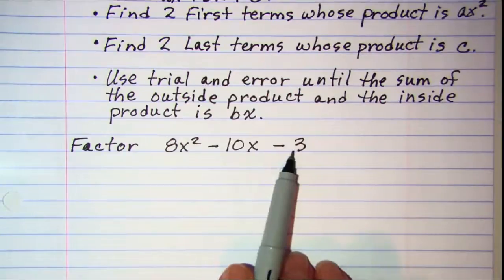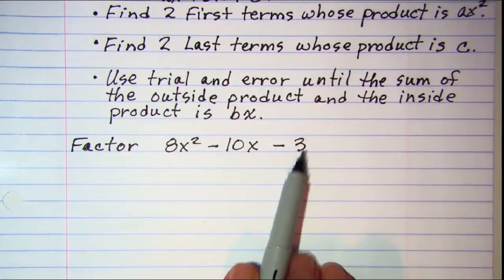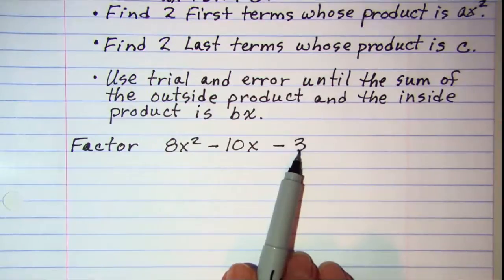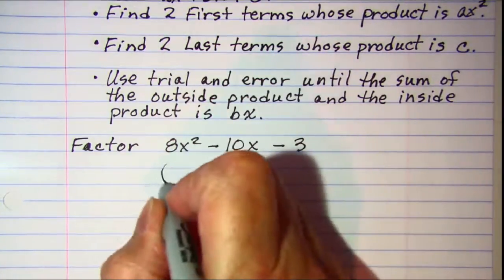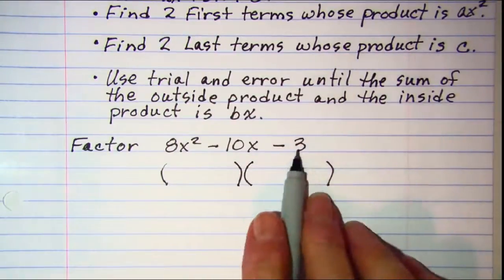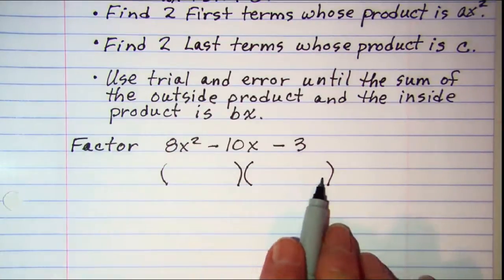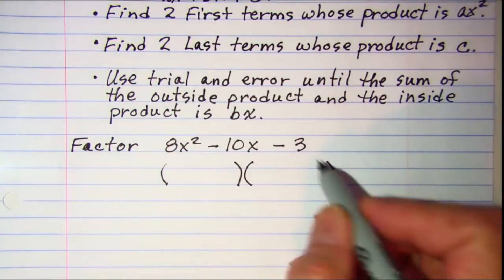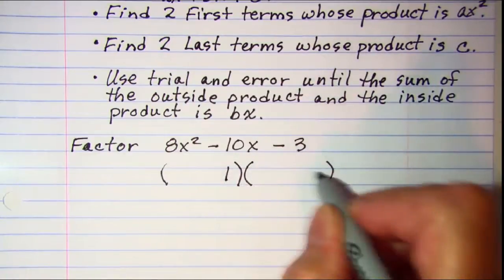The first thing that I'm noticing here is that 3 is a prime number, so that will be a little bit easier to factor because my only choices are 1 times 3. So what I'm going to do is I'm going to stick my 1 and my 3 in the last positions so that I can have something written down to start working with. So to get my 3, I'll have a 1 times 3.